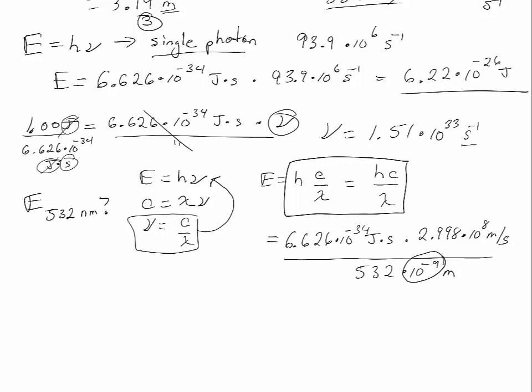Looking at the units that are here, we have joules times seconds times meters over seconds, so these seconds will cancel out. And we have meters in the numerator and meters in the denominator, which cancel out. So we're left with joules, which are the expected unit for energy. And for this green laser, the single photon carries 3.73 times 10 to the negative 19th joules.